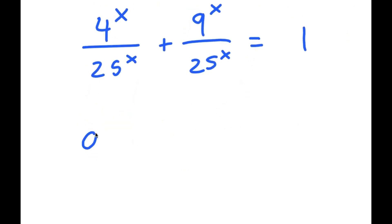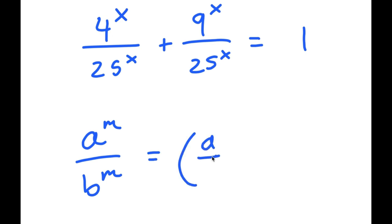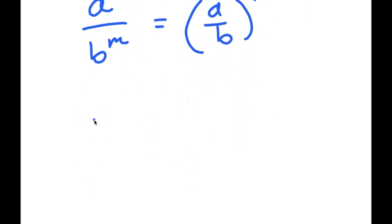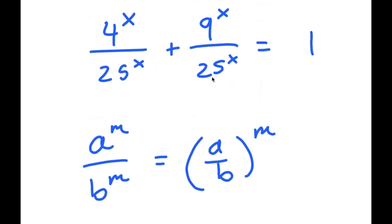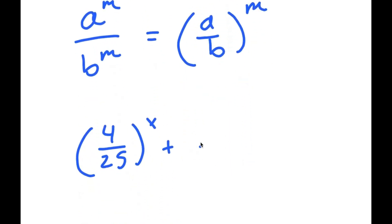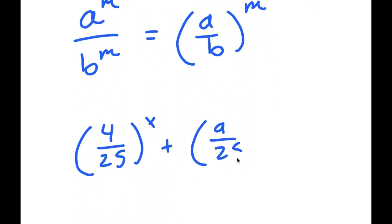Now if I have something in the form a to the power of m over b to the power of m, this is equal to a over b to the power of m. So 4 to the power of x over 25 to the power of x turns into 4 over 25 to the power of x, and 9 to the power of x over 25 to the power of x turns into 9 over 25 to the power of x.